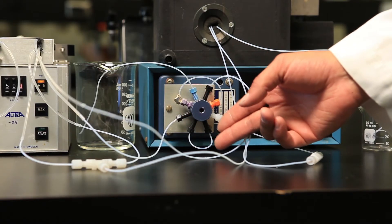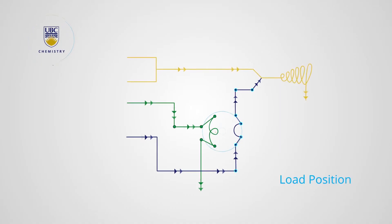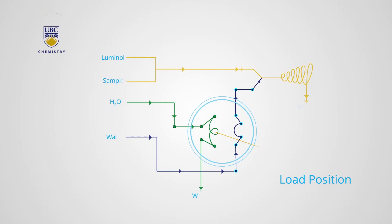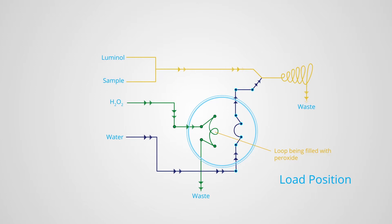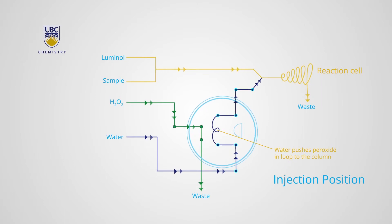When the injection loop is in the load position, hydrogen peroxide is filling the sample loop, and any excess comes out as waste. In the inject position, water carries the peroxide to the reaction cell. In both positions, the luminol and sample are directly carried to the reaction cell.